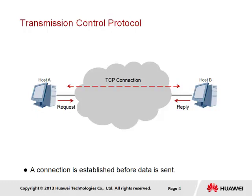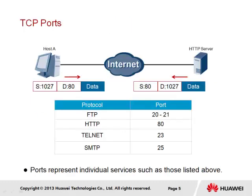Host A and Host B are shown to establish a TCP connection over the network, allowing both end stations to be effectively in communication with one another while transmission takes place. TCP connections are communicated through port numbers. Each connection will be represented by two port numbers — one that represents the source point of the connection, and one for the destination. Every application that relies on TCP will be associated with one or more port numbers, which represent a mapping to individual applications and services.